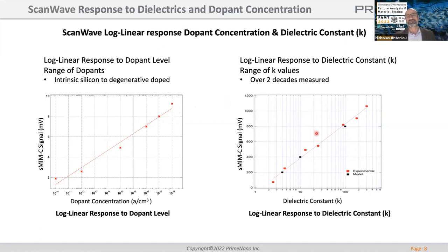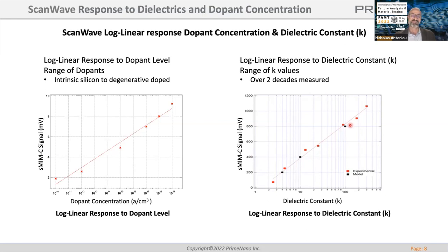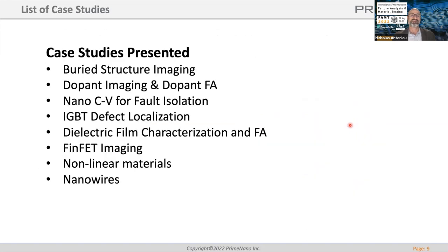The next material we can quantify — though we haven't done it yet — would be dielectrics. Here is almost two decades of dielectric constant, looking at the relative signal experimental and model values. This is also log-linear, leading to easy quantification and enabling us to find the k-value of dielectrics. Now I'm going to go into some case studies.